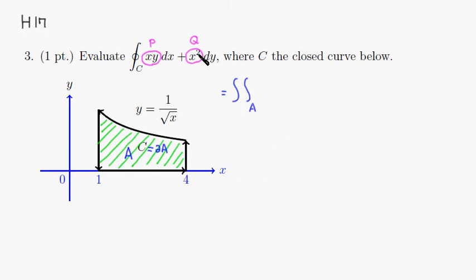So over this region A, we have to take the partial derivative of Q with respect to x, so that's going to be 2x, minus partial derivative of P with respect to y would be x.